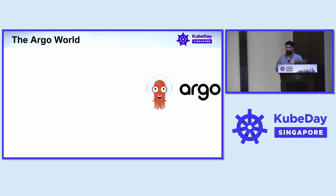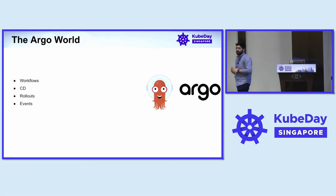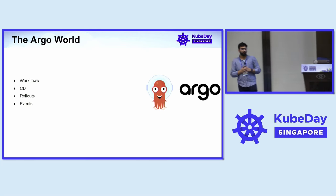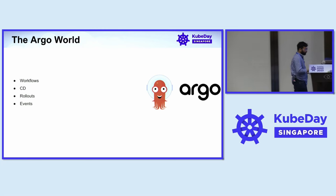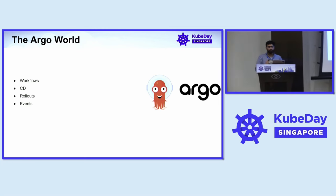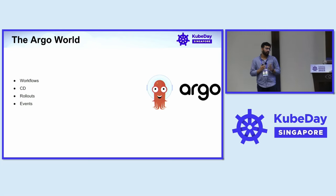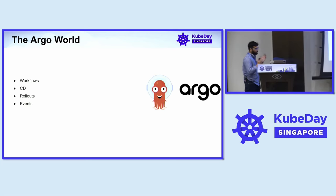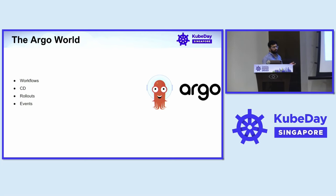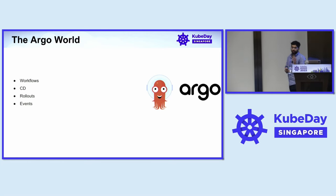You can definitely try Argo workflows, CD events, and rollouts. As of now we are not using Argo CD in production. GitOps is good — you have a single source of truth — but we don't need it right away. Our architecture is designed in a way that doesn't require it currently, but you can obviously go for Argo workflows and CD events.